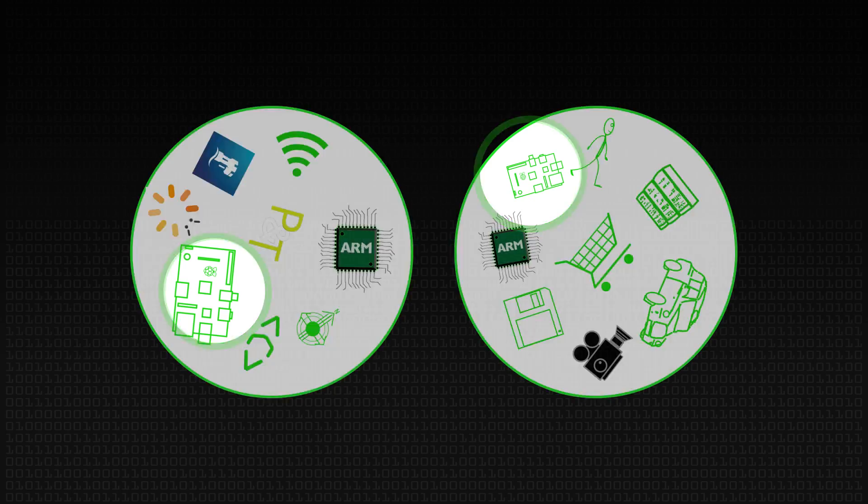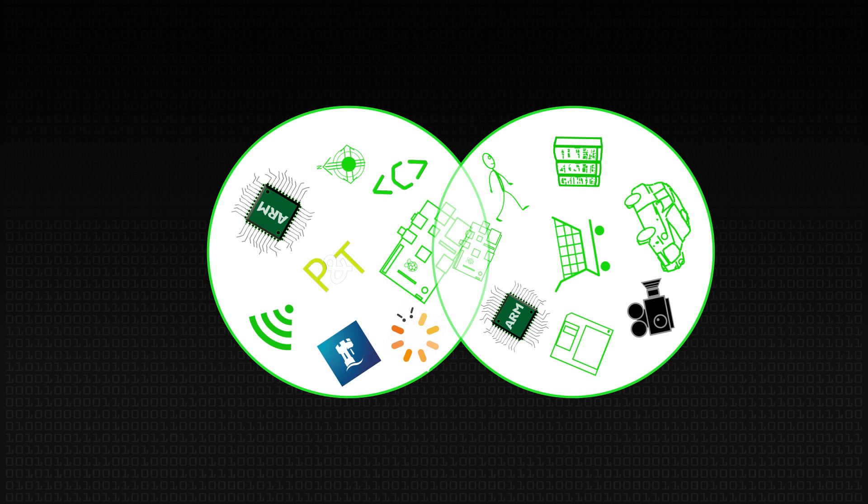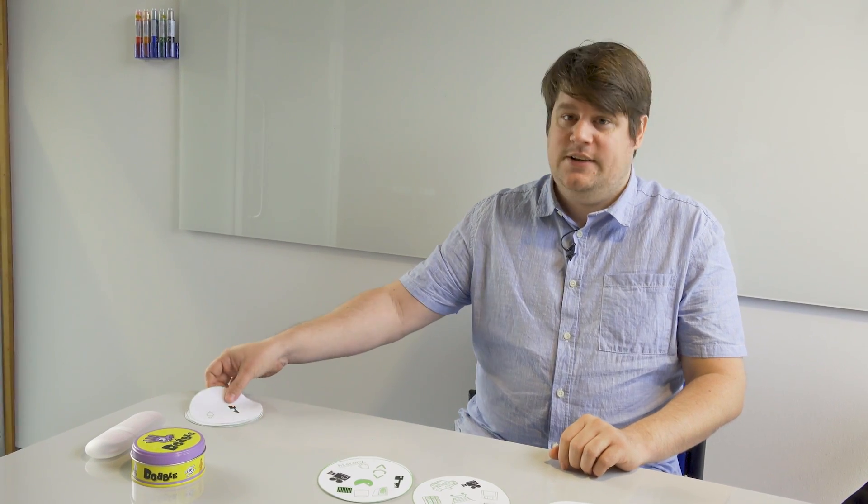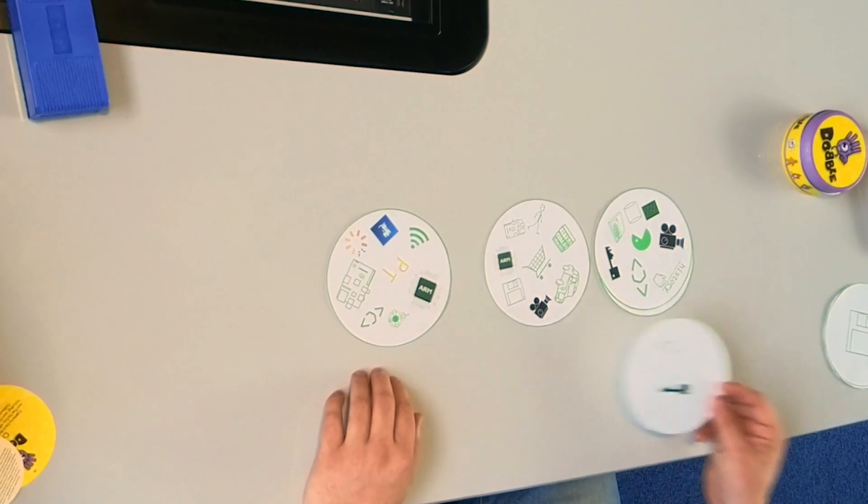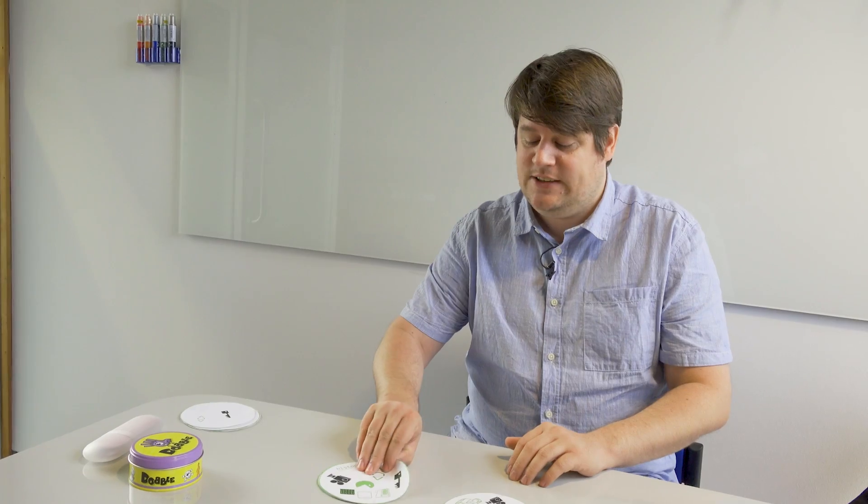So it's no longer the case that every pair of cards have one element in common. They can have multiple elements in common. And perhaps they don't all have the same number of icons like a Dobble set does. But rather they can have various different numbers of icons.